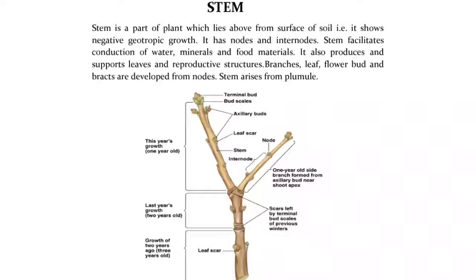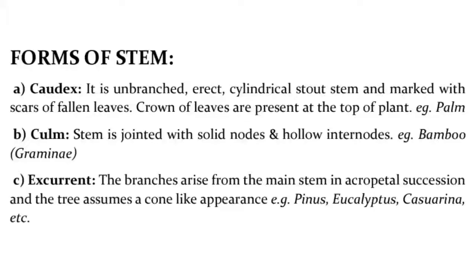Forms of stem: A. Caudex — it is unbranched, erect, cylindrical stout stem marked with scars of fallen leaves. A crown of leaves is present at the top of the plant, e.g., Palm. C. Culm — stem is jointed with solid nodes or hollow internodes, e.g., Bamboo, Gramineae.